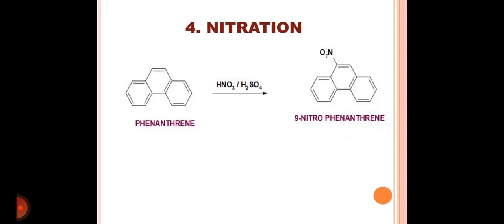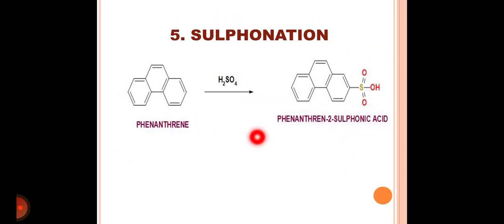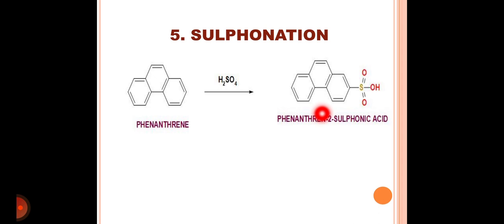The next reaction is the sulfonation reaction. Phenanthrene on reaction with sulfuric acid causes the formation of phenanthrene-2-sulfonic acid. Dear students, this is also an example of an electrophilic aromatic substitution reaction.